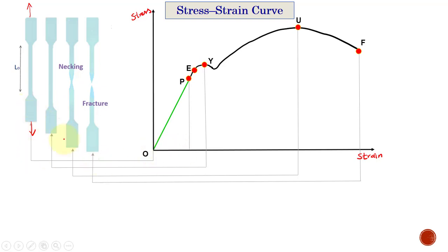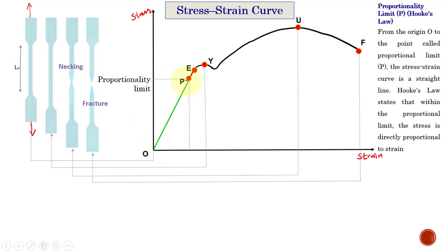At this point, the specimen is subjected to tensile force and the strain increases until this point P. From O to P, it is a straight line. This point is proportionality limit. That means from this point to this point the stress-strain curve is a straight line. It obeys the Hooke's law, meaning the stress is directly proportional to strain.